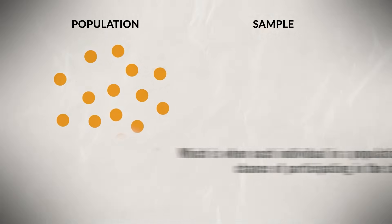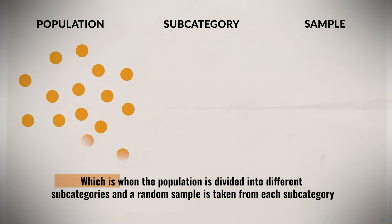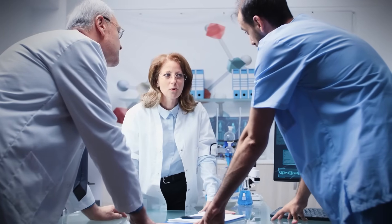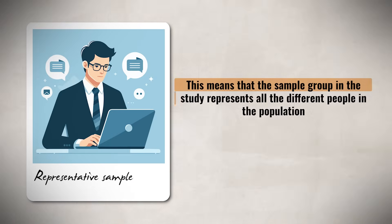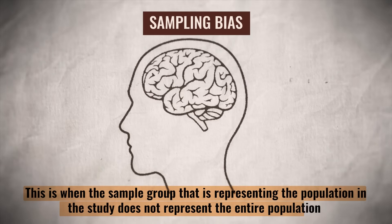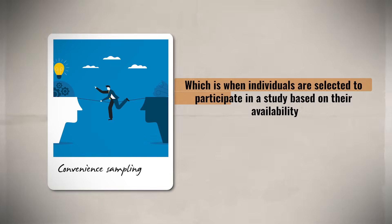When selecting individuals from a population, researchers can use random sampling, where each individual has an equal chance of participating, or stratified sampling, where the population is divided into subcategories and a random sample is taken from each. The goal is always to create a representative sample that reflects all the different people in the population. However, sampling bias can occur when the sample does not accurately represent the population — this happens when the selection process is flawed, such as when certain members have a higher chance of being selected.